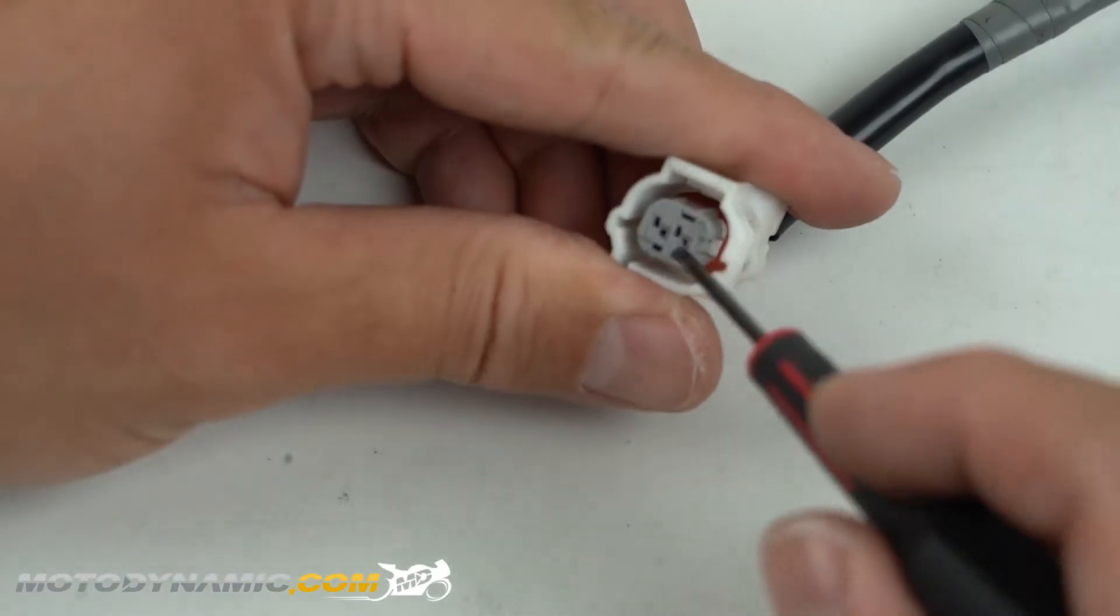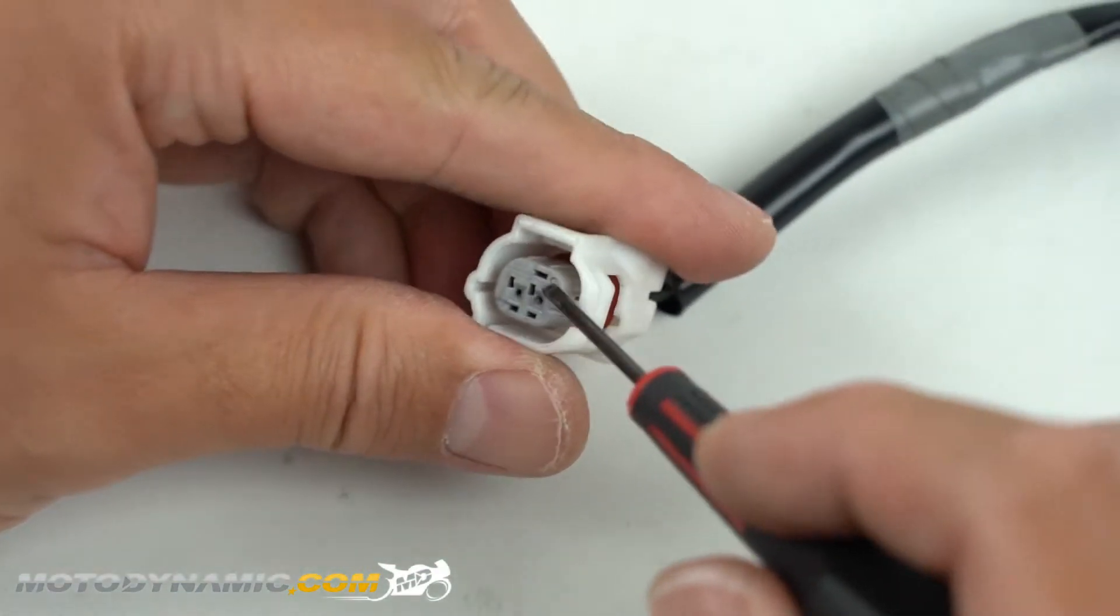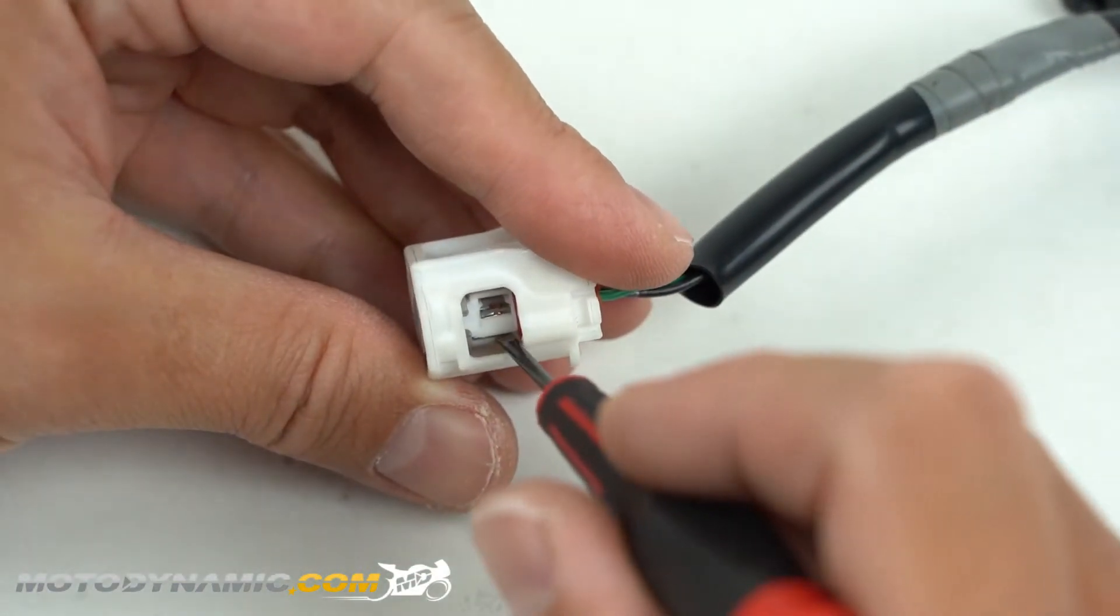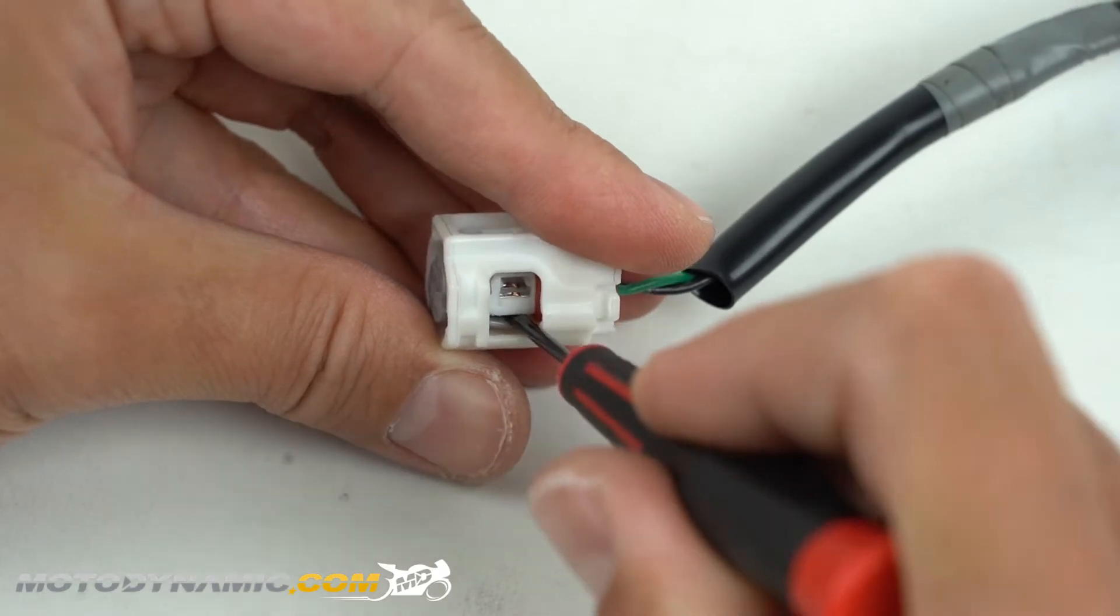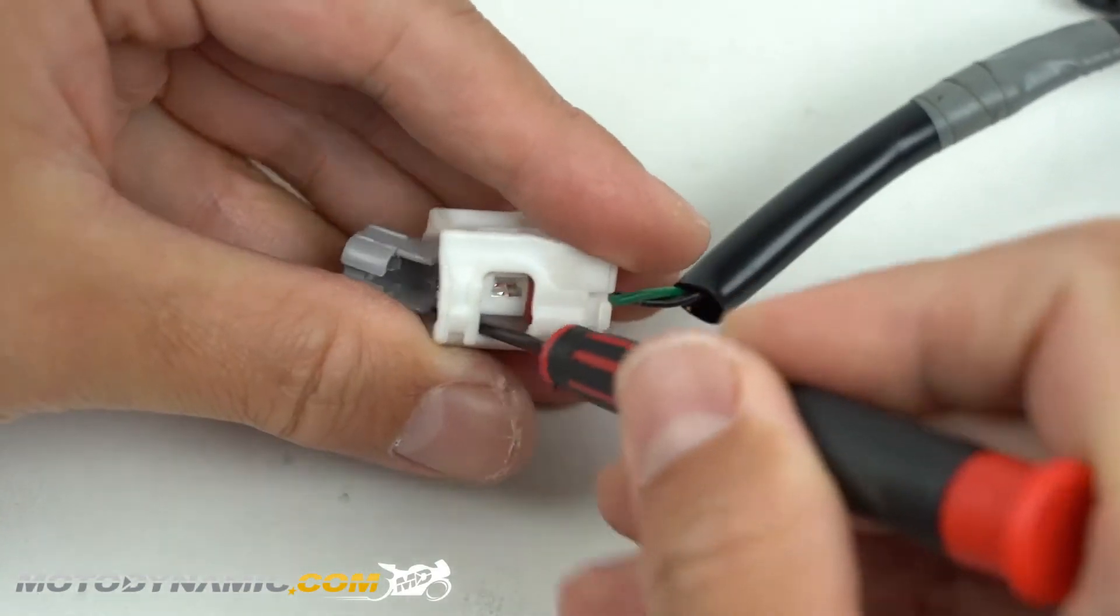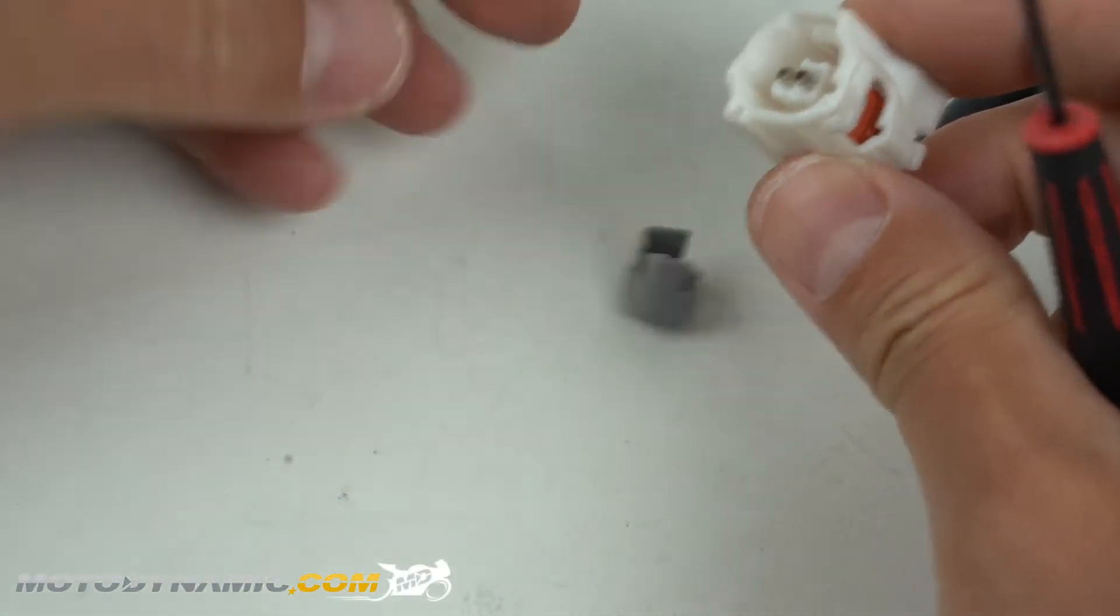Next we're going to be removing this gray color cap right here. All we do is just wedge the screwdriver in between right here. It'll pop right out.